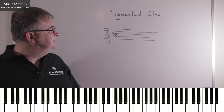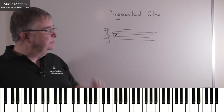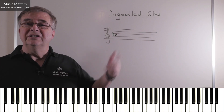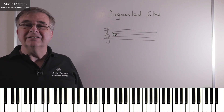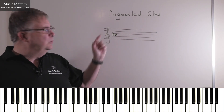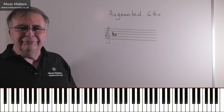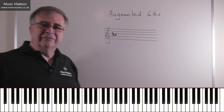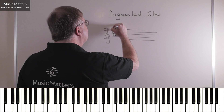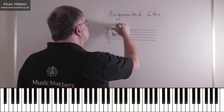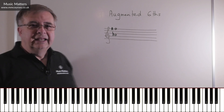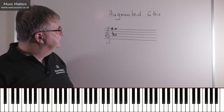Step two: having found A-flat in the case of C major, find the note that is an augmented sixth above it — there's the clue, augmented sixth. So what's an augmented sixth above A-flat? This is where you have to know your intervals. The answer is F-sharp. So that interval from A-flat up to F-sharp is an augmented sixth.